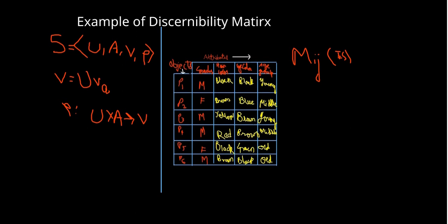As we are dealing with the discernibility relation, first of all we need the equivalence relation, which comes from the indiscernibility relation — specifically the partition or equivalence classes. I am not saying we ignore the indiscernibility relation; from a practical point of view, the discernibility matrix is used, but the partitioning is still carried through the indiscernibility relation. First, I will partition based on the objects. There are six objects, so my equivalence classes are p1, p2, and so on.